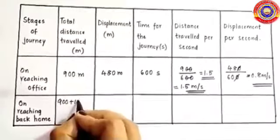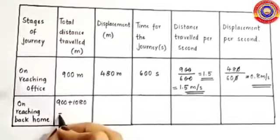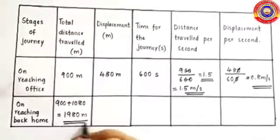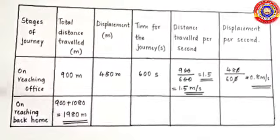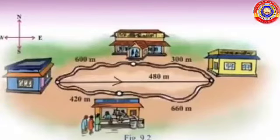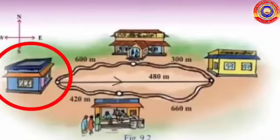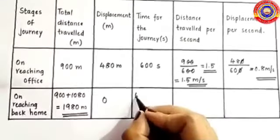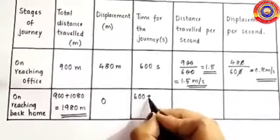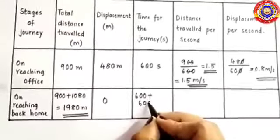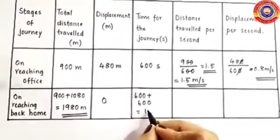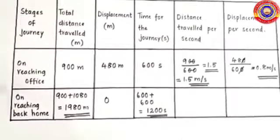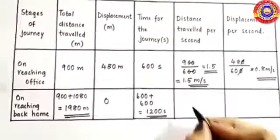On reaching back home, the total distance travelled is 900 plus 1080, which equals 1,980 metres. The displacement — since the initial and final point are the same — will be zero. For time, considering two situations: on reaching the office he took 600 seconds, and on reaching back home again 600 seconds, so 600 plus 600 equals 1,200 seconds.